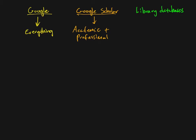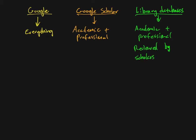Google Scholar is limited to academic and professional sources. Library databases are very similar — they're also going to give you mostly results from academic and professional sources. The difference is that library databases are usually reviewed by people, by scholars and other professionals. There are experts overseeing them and saying yes, these are good sources, those are not good sources.